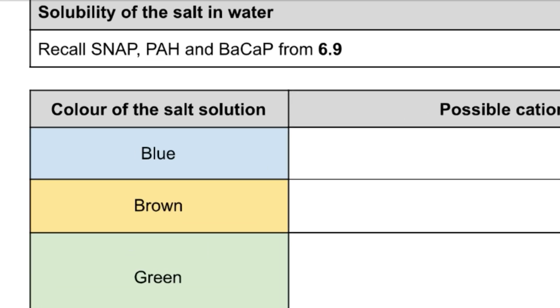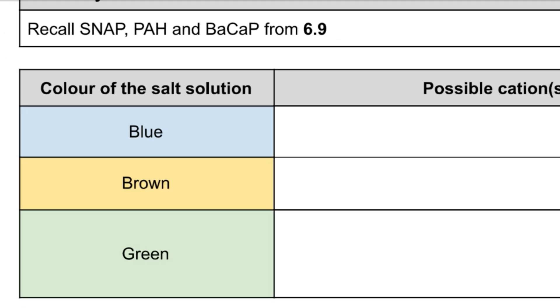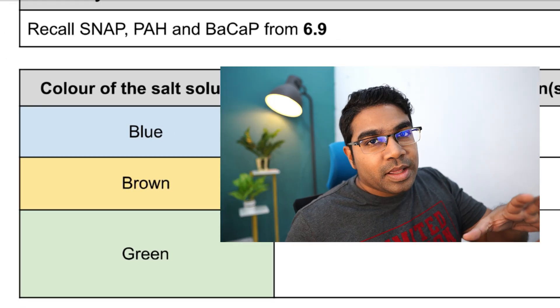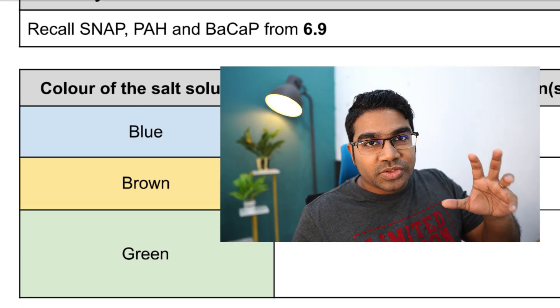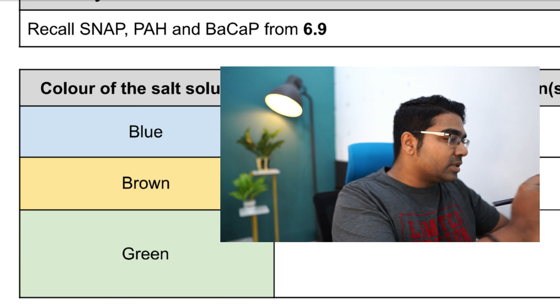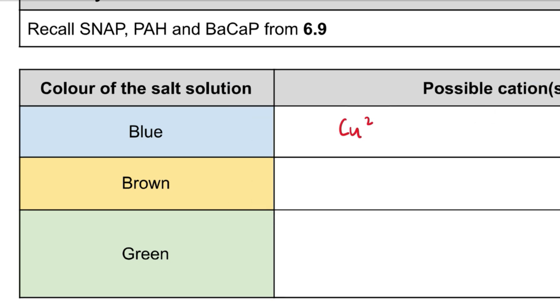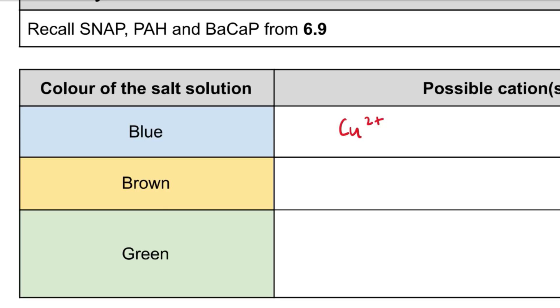Let's say we have a salt solution and the color of the salt solution is blue — the ion present is the Cu2+ ion. If the color of the salt solution is brown, then the ion contributing to this color is the Fe3+ ion.